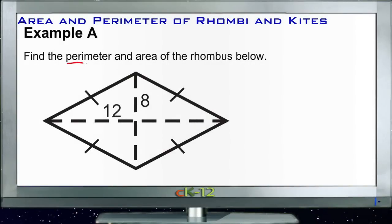In example A, we need to find the perimeter and area of the given rhombus. So what we need to do is find diagonal 1, which in this case is 8 units. We're going to mark D1 as 8 units. Diagonal 2 is 12 units, so our D2 is 12.